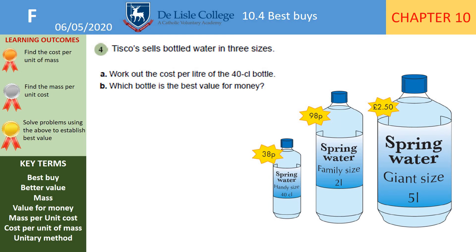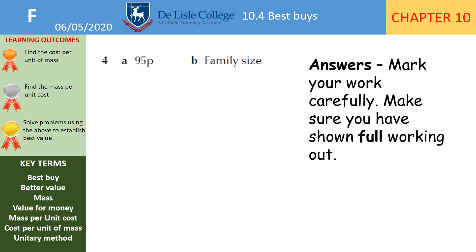Question 4 has three bottle sizes to compare, so for part B — which is best value for money — you'll need to do three calculations before making your comparison. Pause the video while you do that. Here is your answer: the answer is family size, but if that were an exam question with no working out shown, you would definitely score zero marks. Mark it and move forward.